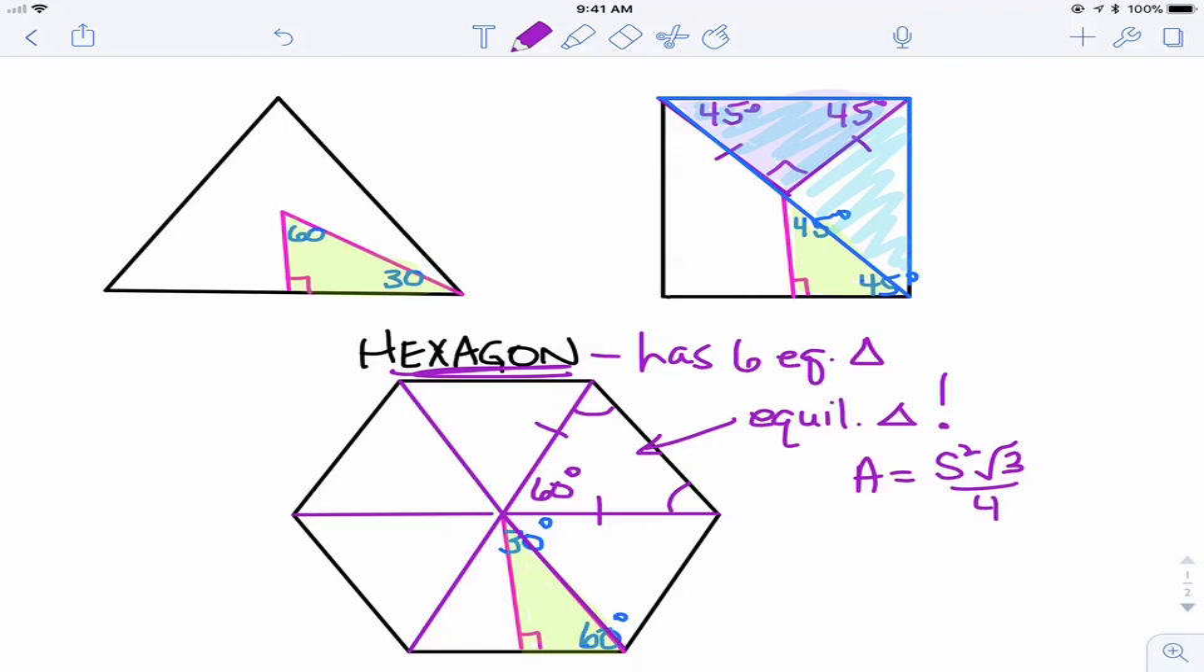So for example, in a hexagon, you could do the area of one of these triangles, and then multiply by 6 if that's easier.